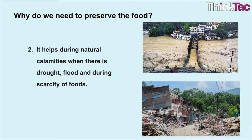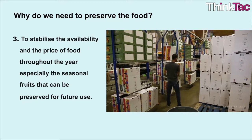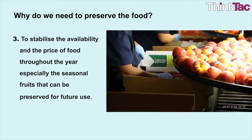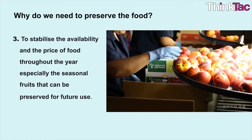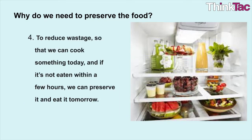Two, it helps during natural calamities when there is drought, flood and during scarcity of foods. Three, to stabilize the availability and the price of food throughout the year, especially the seasonal fruits that can be preserved for future use. Four, to reduce wastage so that we can cook something today and if it is not eaten within a few hours, we can preserve it and eat it tomorrow.